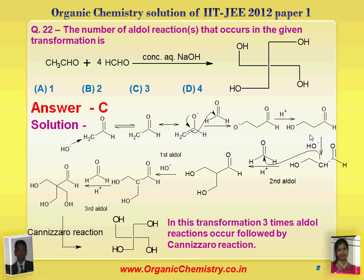Aldol means when any aldehyde which has alpha hydrogen, on treatment with any base, it will give beta-hydroxy aldehyde. So this is the first aldol reaction. Again the base abstracts alpha hydrogen to form a carbanion, which is resonance stabilized and then attacks another formaldehyde molecule to give the second aldol product. Again the base abstracts alpha hydrogen to form a carbanion, which again attacks over formaldehyde to form the third aldol product.